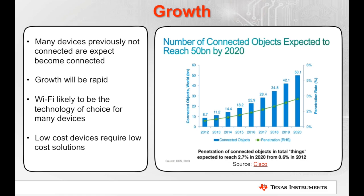Not all devices require a fast CPU with high-level operating system. Many devices are low-cost and hence require a low-cost connection technology. The integrated MCU and Wi-Fi provides just about everything a device will require to become connected, and all at an affordable price point. The graph on the right was produced by Cisco — they expect there to be 50 billion connected objects by 2020.